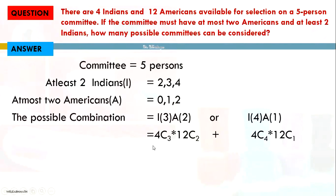Using combination rules, ₄C₃ = 4 and ₁₂C₂ = 66. First complete the multiplication: 4 × 66 = 264. Then ₄C₄ = 1 and ₁₂C₁ = 12, so 1 × 12 = 12. Add them: 264 + 12 = 276. Therefore, we can make the committee in 276 different ways.